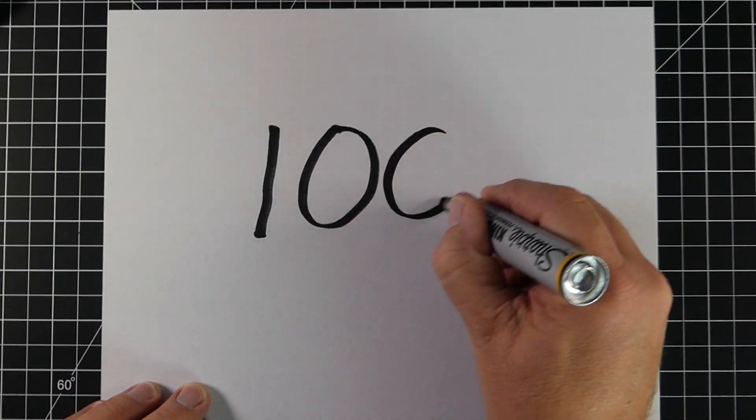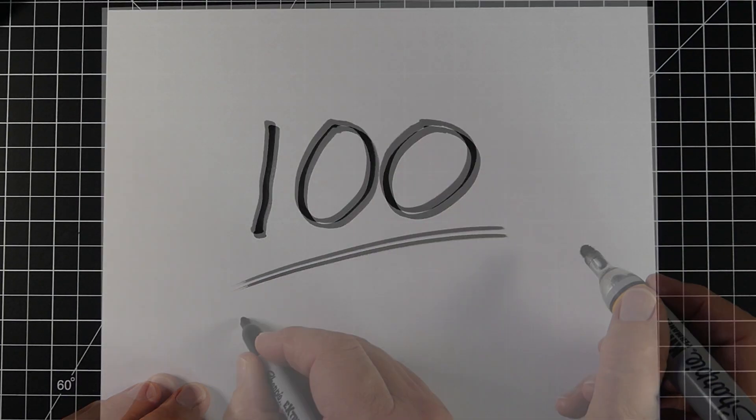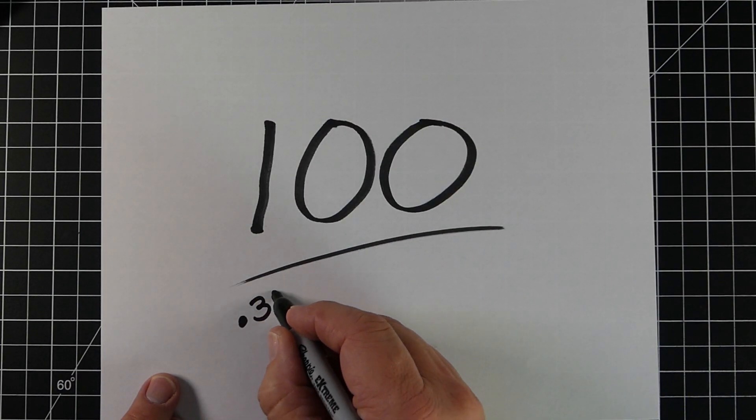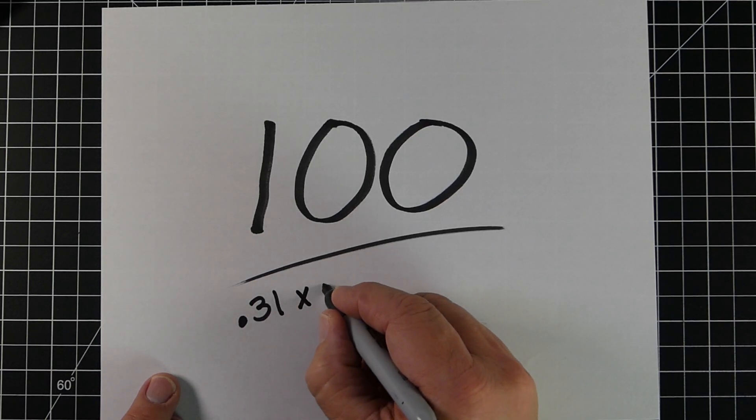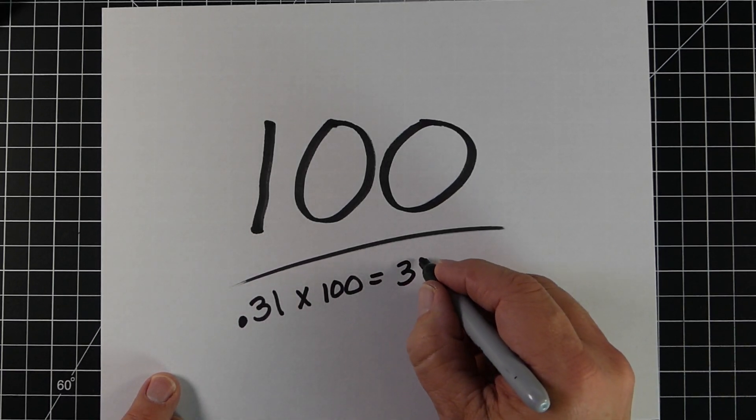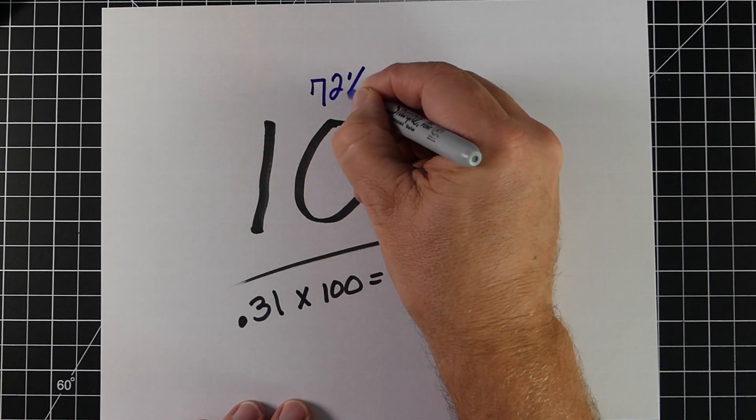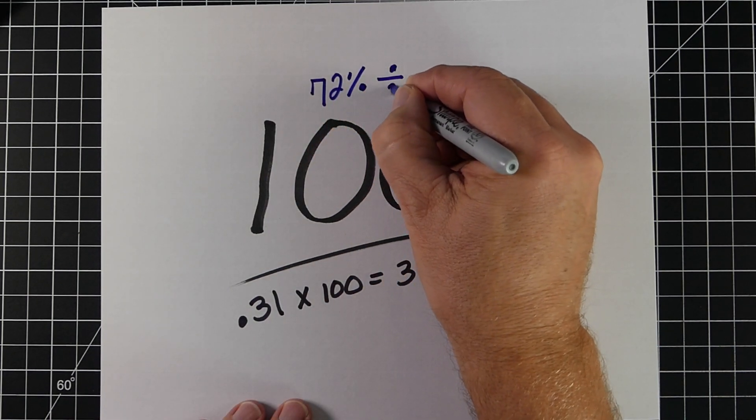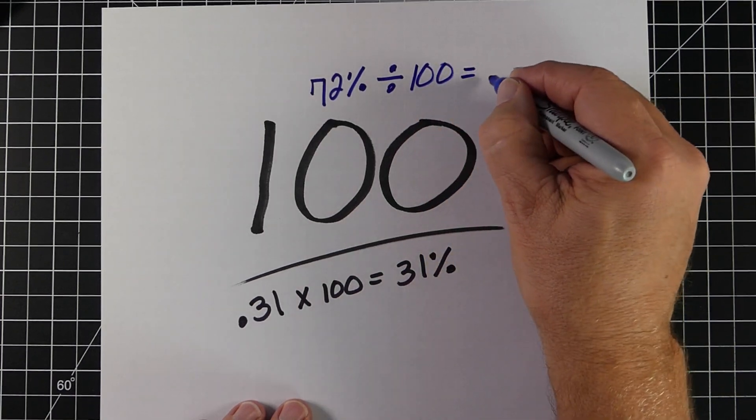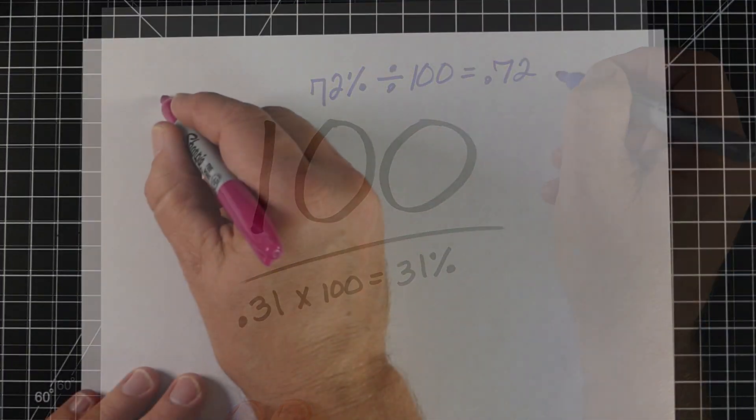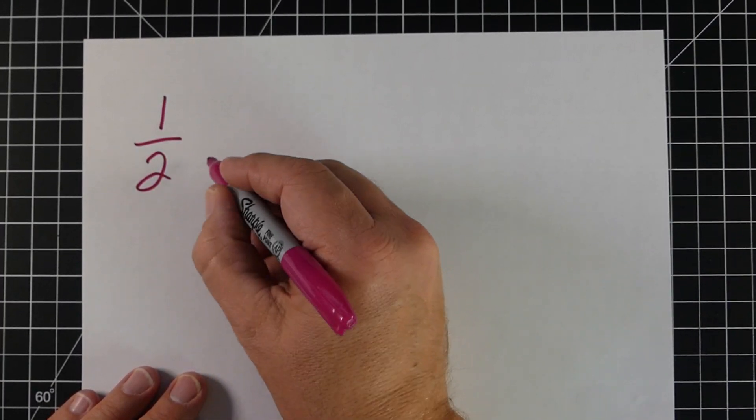The other key concept is percents are based on the number 100. Percents are basically how many out of 100. So that will come up all the time. For example, if we have decimals, a lot of times we'll multiply it by 100 to get 31%. Or if we have a percent like 72%, we end up dividing by 100, and that gives us 0.72. So the 100 is a key player in all this.